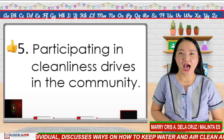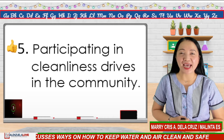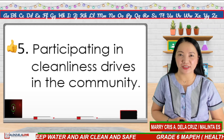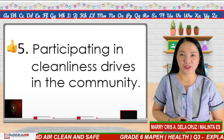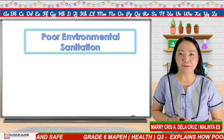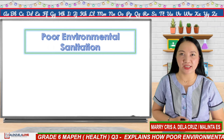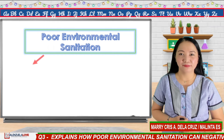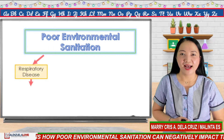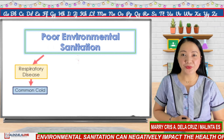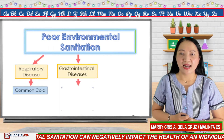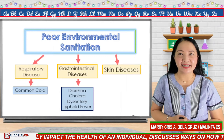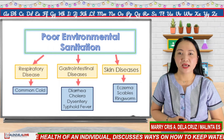Let's have a quick recap. In today's lesson, you learned about environmental sanitation — the promotion of hygiene and the prevention of disease and other consequences of ill health relating to environmental factors. Poor sanitation negatively impacts the environment and the health of the people living in it. Diseases and disorders caused by poor environmental sanitation include: respiratory disease like common cold; gastrointestinal diseases like diarrhea, cholera, dysentery, and typhoid fever; and skin diseases like eczema, scabies, and ringworms.